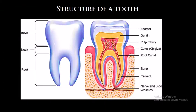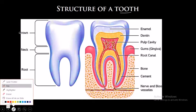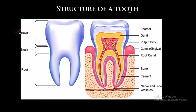Here we can look at the structure of the tooth, which has three main components: the crown, neck, and root. The upper part of the tooth which is visible is the crown, the partially visible part is the neck, and the one that is embedded inside is the root.